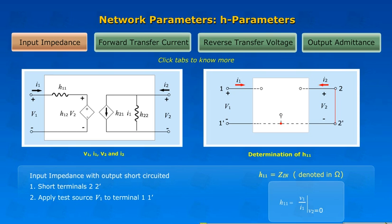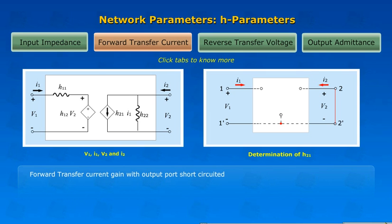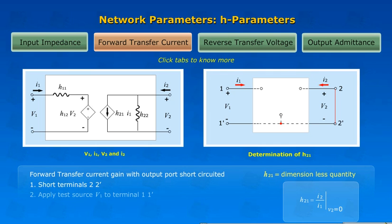Forward Transfer Current Gain with Output Port Short-Circuited: Short Terminals 2-2, Apply Test Source V1 to Terminal 1-1.